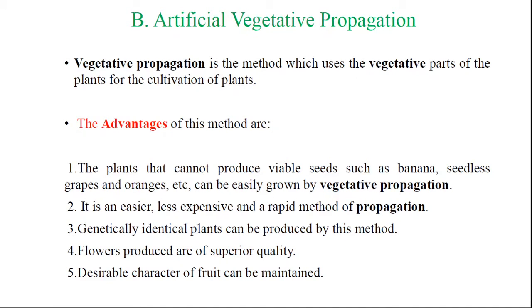We all know vegetative propagation involves a vegetative part of the plants. Vegetative propagation is the propagation which takes place by the vegetative parts of the plants. There are two ways of vegetative propagation: the first one is the natural methods of vegetative plant propagation, and the second one is the artificial methods of vegetative propagation.